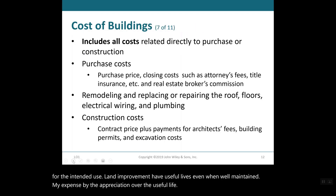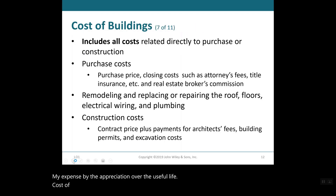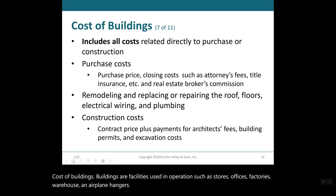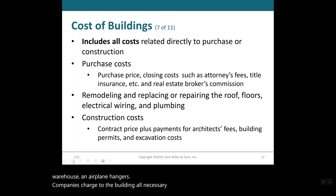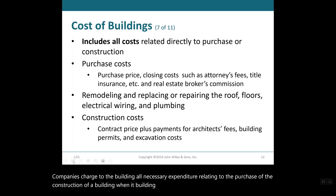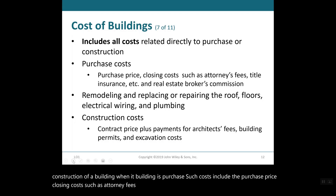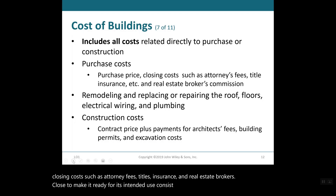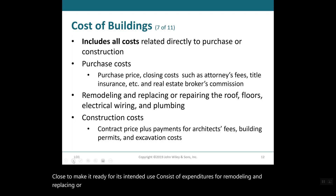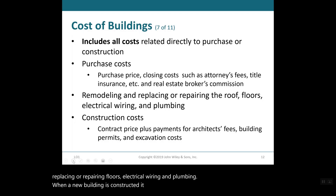Cost of buildings: Buildings are facilities used in operations such as stores, offices, factories, warehouses, and airplane hangars. Companies charge to the building account all necessary expenditures relating to the purchase or construction of a building. When a building is purchased, such costs include the purchase price, closing costs such as attorney fees, title insurance, and real estate broker's commission, plus costs to make it ready for use — such as remodeling and replacing or repairing floors, electrical wiring, and plumbing. When a new building is constructed, its cost consists of the contract price plus payments made by the owner for architect fees, building permits, and excavation costs.